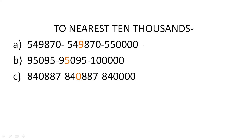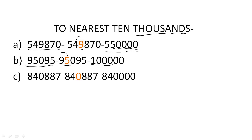Let us understand how we will round off to the nearest 10,000. Which place will you check? You will check the place of 1000s. In this number, the 1000s place is 9. Since 9 is greater than 5, add 1 to 4, giving 4 plus 1 equals 5. The rest of the digits will be 0, 0, 0, 0, and you will get 5,50,000. In the second example, the 1000s place is 5, so add 1 to the left digit: 9 plus 1 equals 10. In the next example, the 1000s place is 0, so there will be no changes and you will get the number 8,40,000.